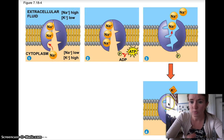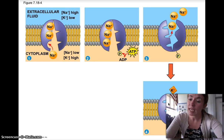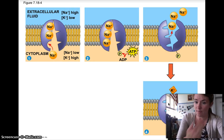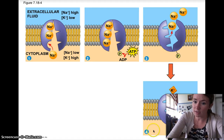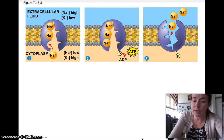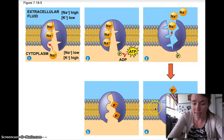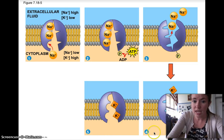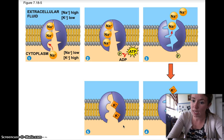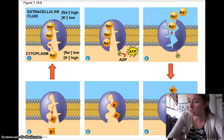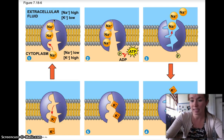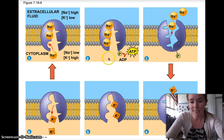Then two potassiums come in. Potassium is in low concentration outside and high concentration inside, so when we move it across the membrane by putting in another ATP, we're moving potassium from low concentration to high concentration — so we need to put in ATP. This is active transport. It'll go back and do it again, and that's how we maintain this concentration gradient of high sodium outside and high potassium inside.